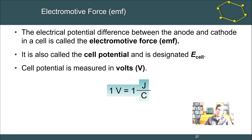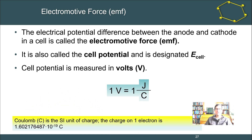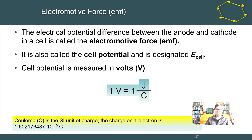A joule is an energy unit; a coulomb is a unit of charge. So a volt is related to the amount of energy per charge unit. A coulomb is the SI unit of charge. The charge on one electron is 1.602 × 10⁻¹⁹ coulombs. We'll more typically deal with a mole of electrons, and we can relate that to Faraday's constant.